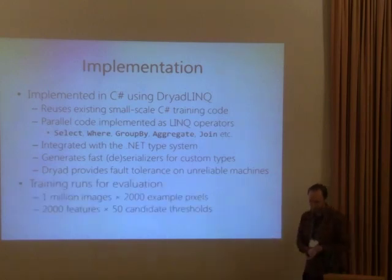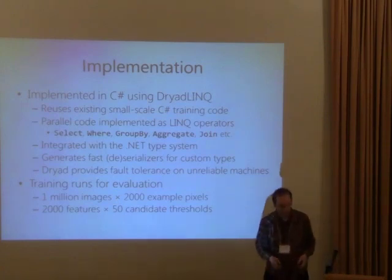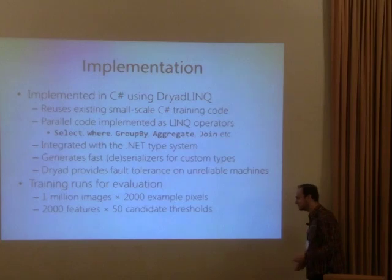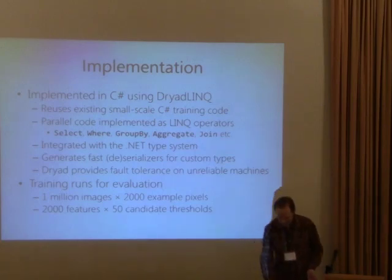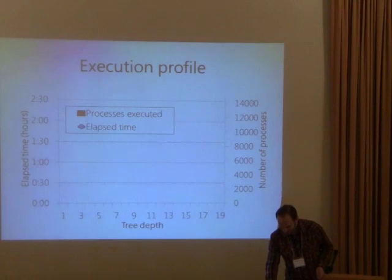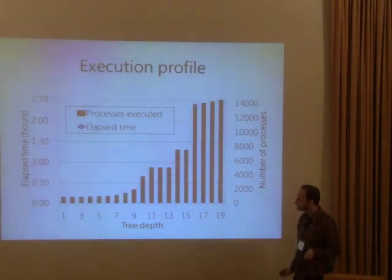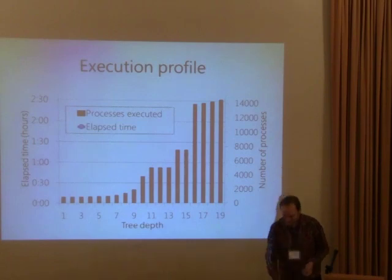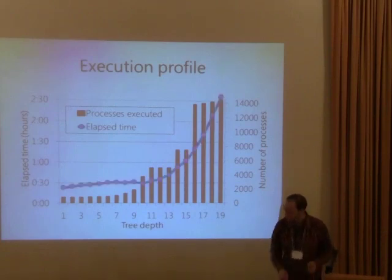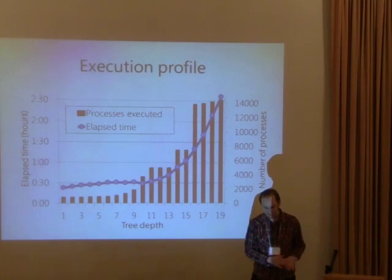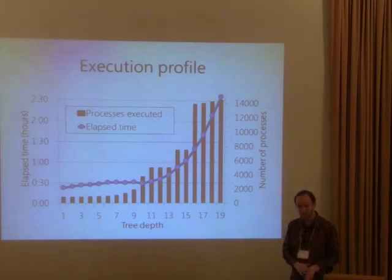Here are some numbers from one of the training runs. We had one million training images, 2,000 example pixels from each, computing 2,000 continuous features with 50 candidate thresholds per feature. On our test cluster, training three trees to depth 19 takes about one day. The red bars show the number of Dryad vertices executed in each round — a massive number of processes — while the blue line shows time spent in each stage, ranging from about 30 minutes in early stages to two and a half hours at level 19.